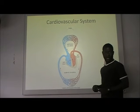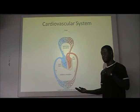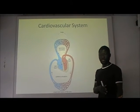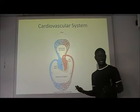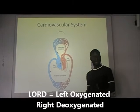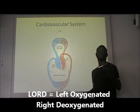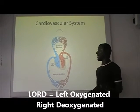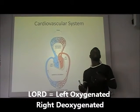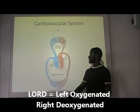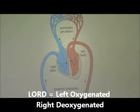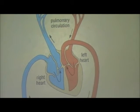There is an acronym I would like to mention — LORD, L-O-R-D — which will help us explain the circulation of blood around the heart more easily, because we need to know what type of blood each side of the heart is receiving. L stands for Left, O for Oxygenated — meaning the left side of the heart receives oxygenated blood. R stands for Right and D for Deoxygenated — meaning the right side of the heart receives deoxygenated blood. I shall start the explanation from the right side of the heart.